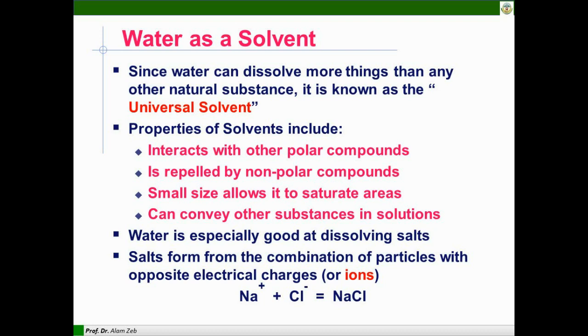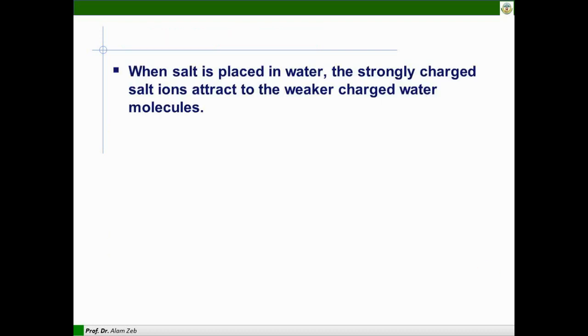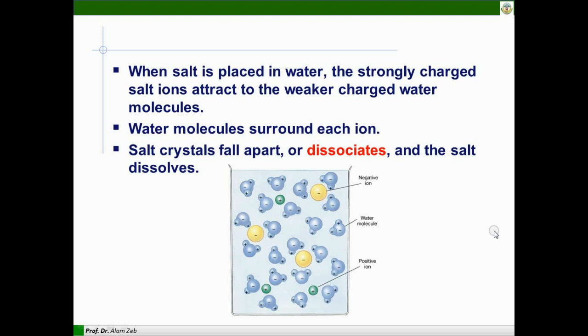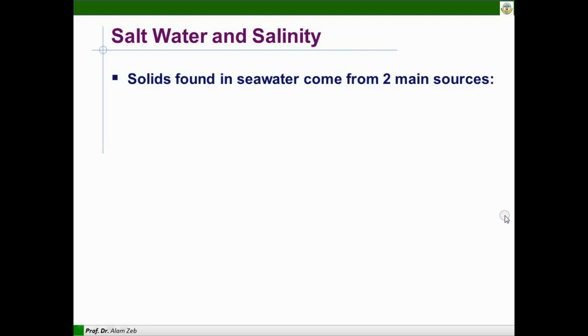Salt forms from the combination of particles with opposite electrical charges or ions, for example sodium and chloride. When salt is placed in water, the strongly charged salt ions attract to weaker charged water molecules. The negative charge is attracted by hydrogen of the water molecules while a positive is attracted by the negative of the ions. Water molecules surround each ion. Salt crystal thus dissolves.